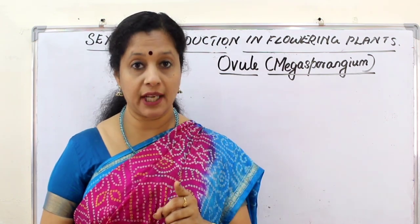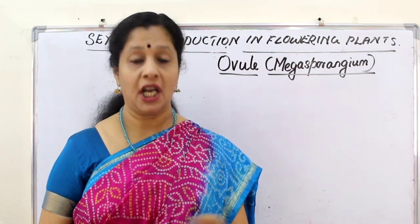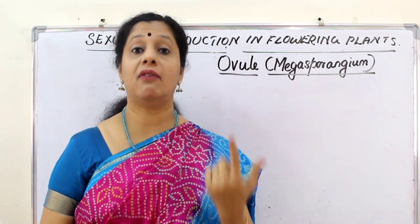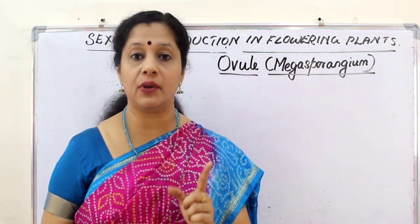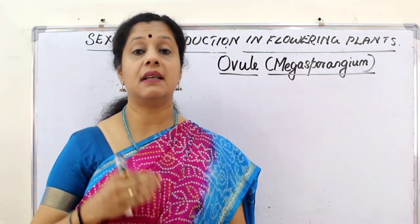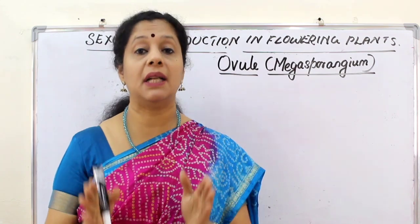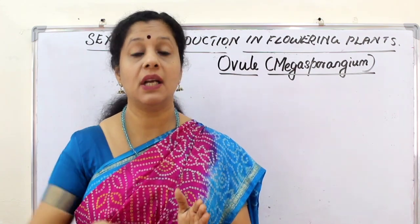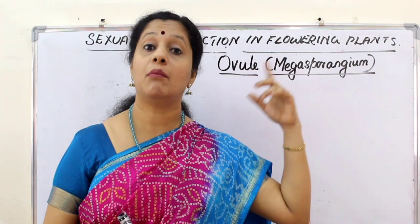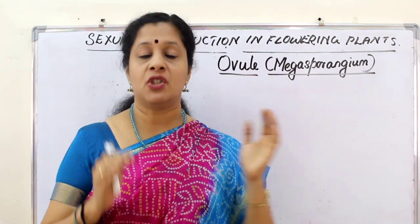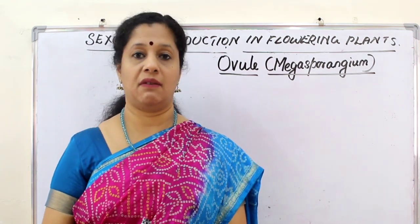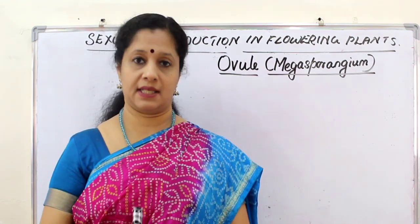The megasporangium is nothing but the ovule, but the ovule itself is not the female gamete. Inside the ovule there will form a structure called the embryo sac. The embryo sac is the female gametophyte — a gamete-producing structure. Just as the pollen grain is the male gametophyte, within the embryo sac the female gamete will form and then fertilization occurs.